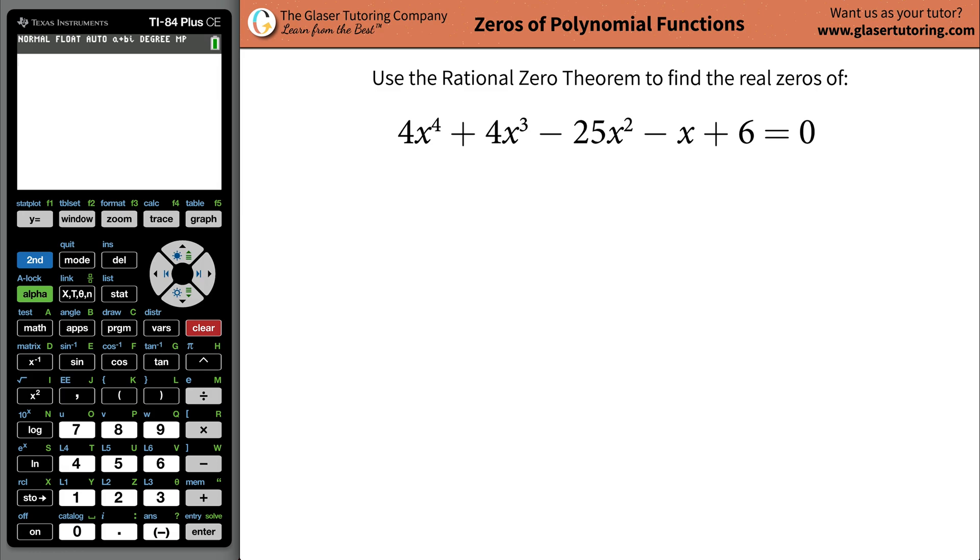Hello everyone, this is Andrew Glazer from GlazerTutoring.com, and today I would like to teach you how to use the rational zero theorem to find the possible real zeros of the following function: 4x raised to the 4th plus 4x raised to the 3rd minus 25x raised to the 2nd minus x plus 6.